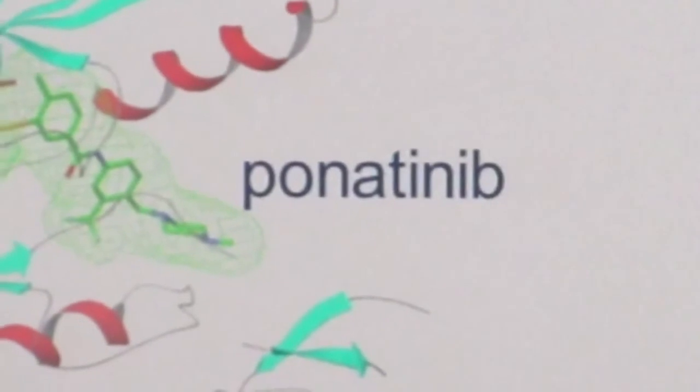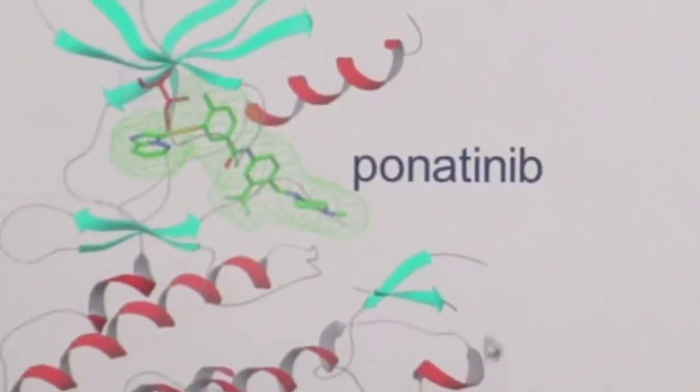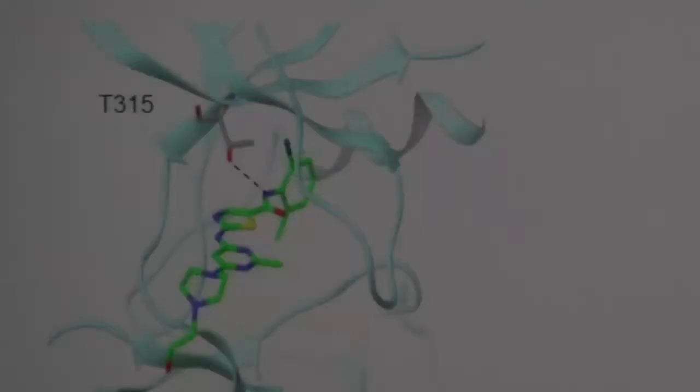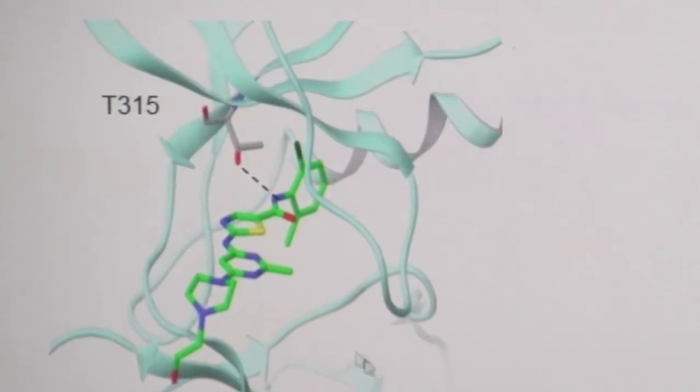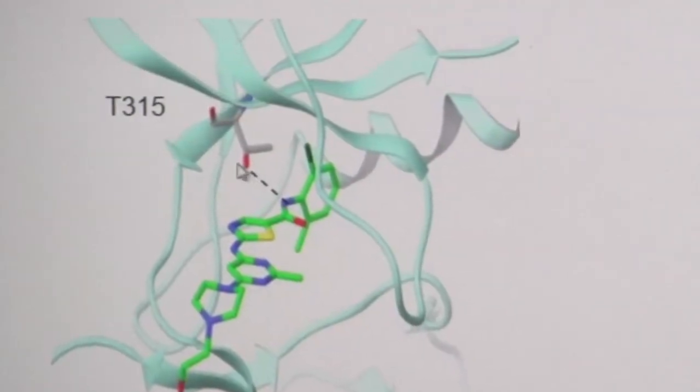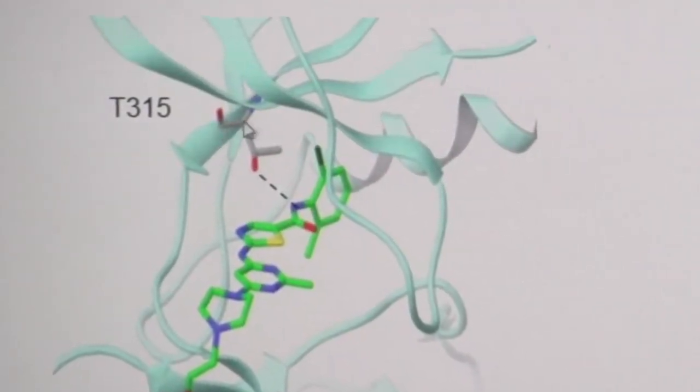When we started working on perlatinib, trying to find a good pan-BCR-ABL inhibitor, we found that for the known inhibitors at that time, they all make a key hydrogen bond to this gatekeeper residue, T315.